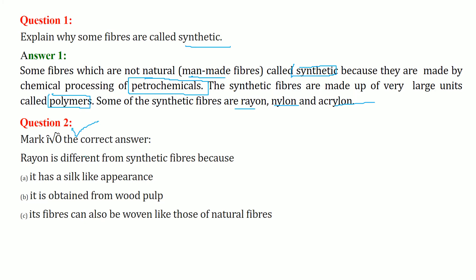Next question is a multiple choice: Rayon is different from synthetic fibers because — the correct answer is B: it is obtained from wood pulp.